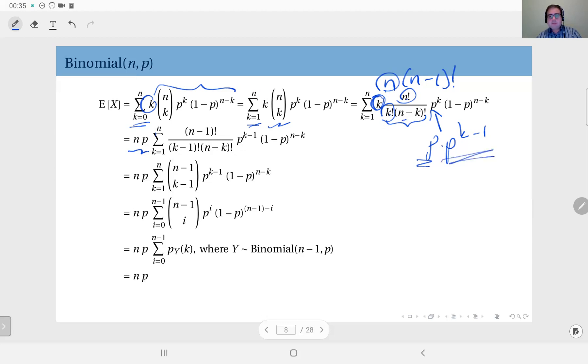So now observe that this term here is (n-1) choose (k-1). So I have here (n-1) choose (k-1) times p^(k-1) times (1-p)^(n-k).